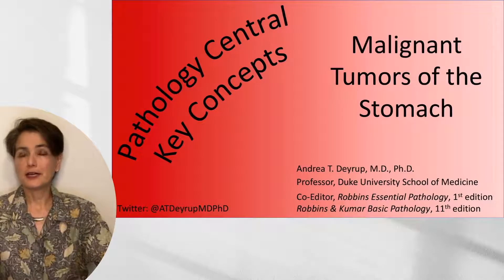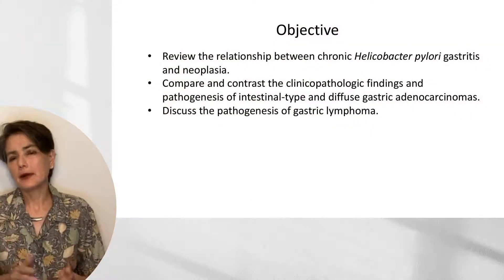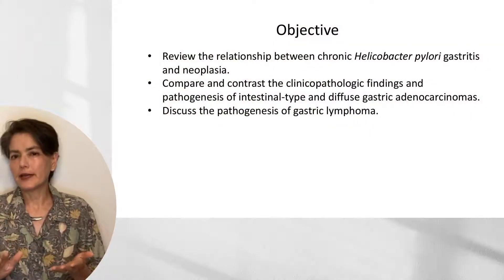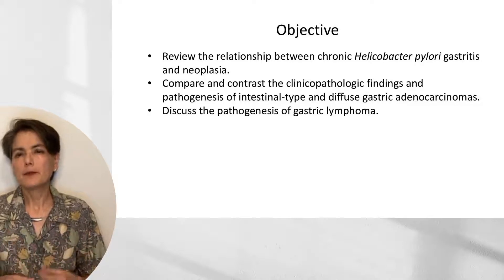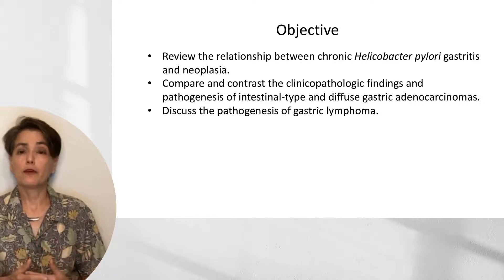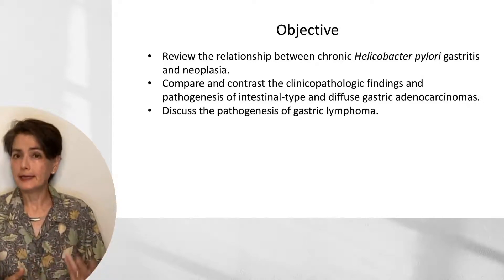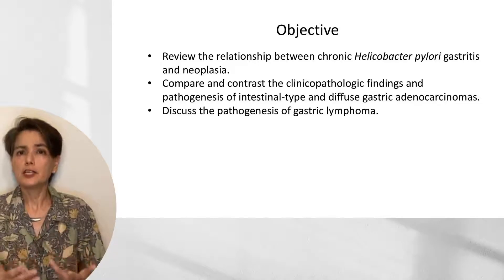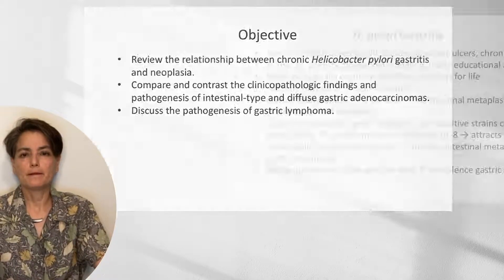Welcome to Pathology Central Key Concepts. The topic of this video is malignant tumors of the stomach. I'm going to begin by laying the foundation with a description of chronic Helicobacter pylori gastritis because it's an etiologic factor in two of the entities I'll be discussing. Next, I'm going to focus on the two types of gastric adenocarcinoma — intestinal type and diffuse — finishing up with a discussion of gastric lymphoma.